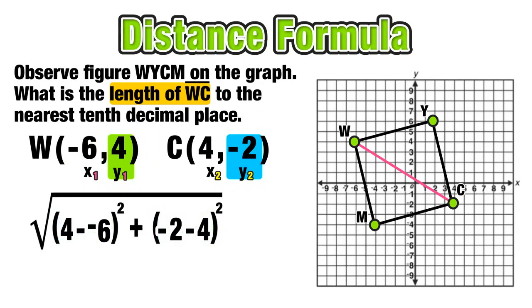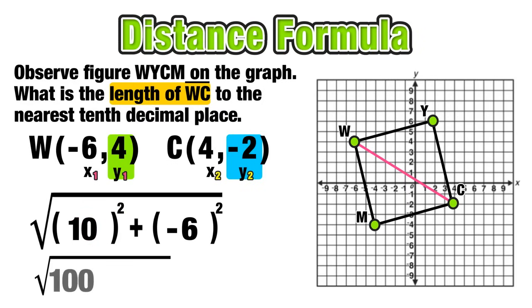So now we can continue to evaluate 4 minus negative 6, the double negative becomes a positive, so 4 plus 6 equals 10. And on the right side of parentheses, negative 2 minus 4 is equal to negative 6. Now the exponents, 10 squared is equal to 100, plus negative 6 squared is equal to positive 36. And 100 plus 36 is equal to 136.